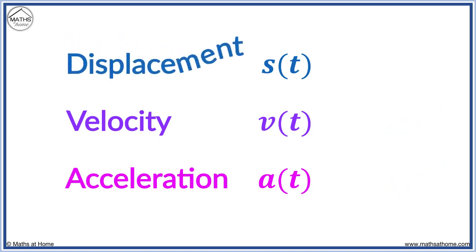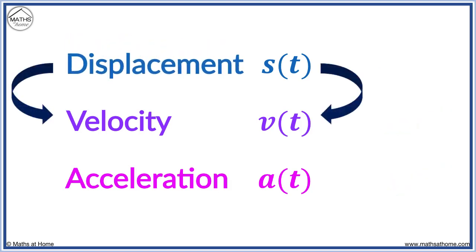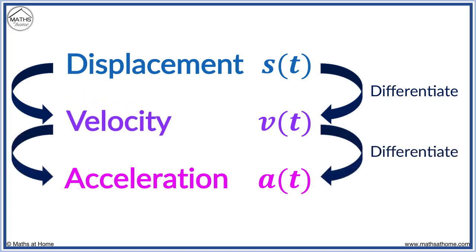To get from displacement to velocity, we differentiate. This is because velocity is the rate of change of displacement. And if we take velocity and differentiate, we get acceleration. Acceleration is the rate of change of velocity.